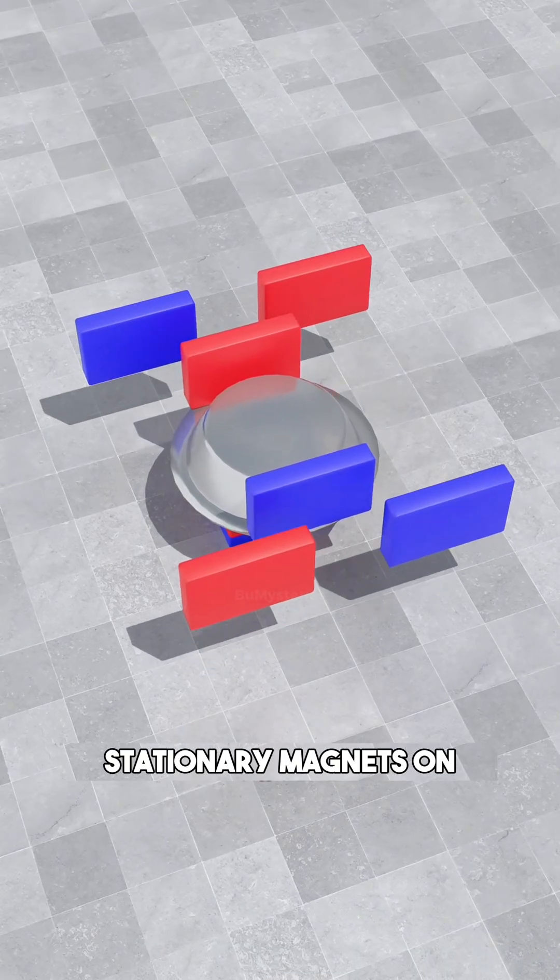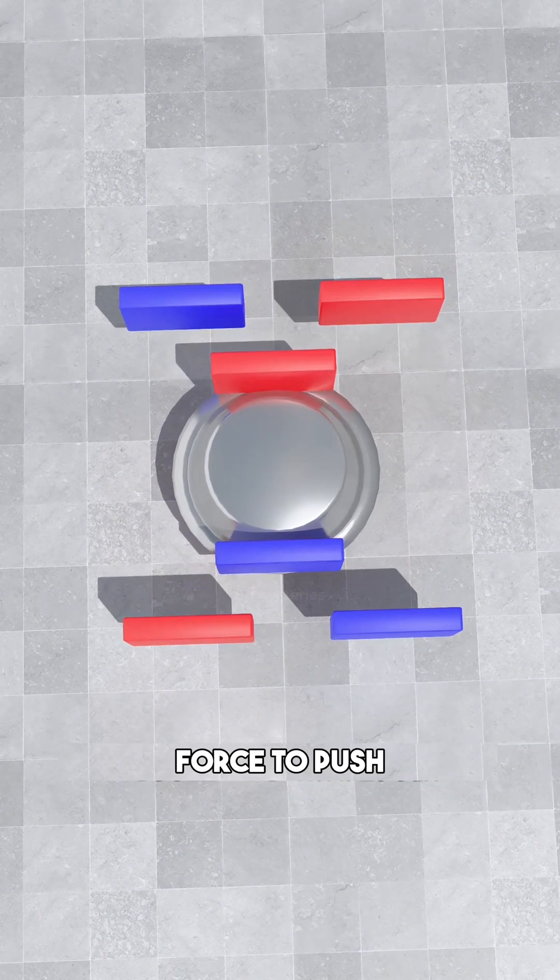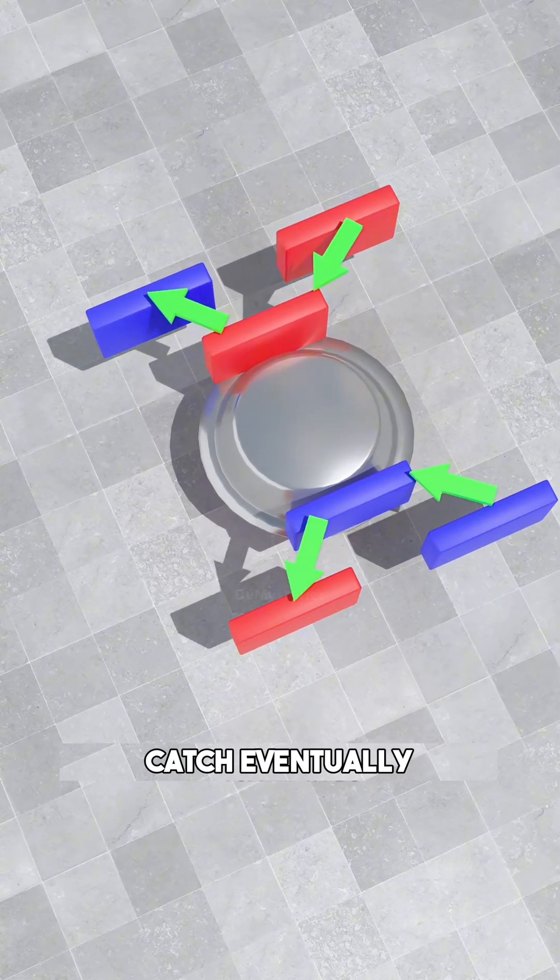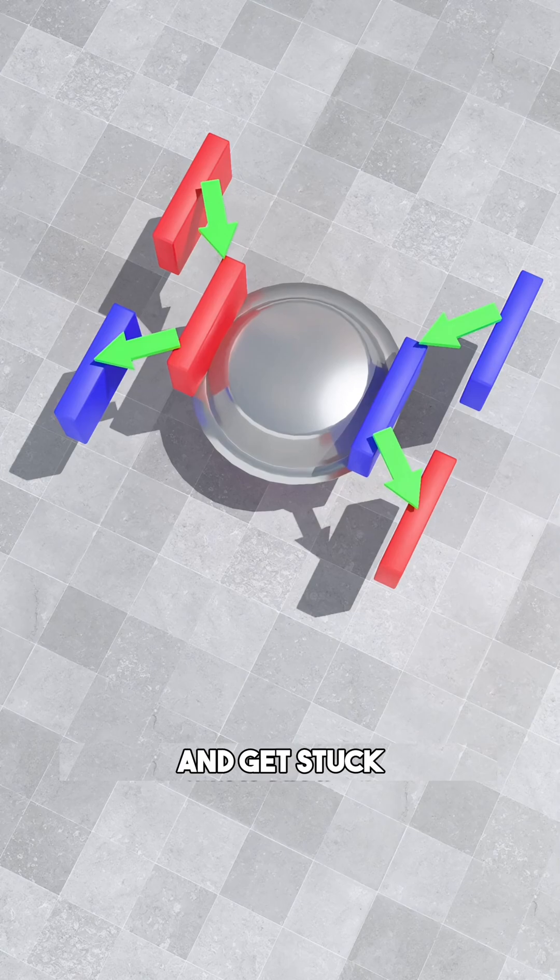If you place stationary magnets on either side of the bowl, you can use that same force to push from behind and pull from the front. But there's a catch. Eventually, the bowl will reach the end of the pull and get stuck.